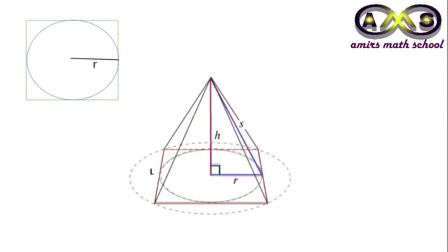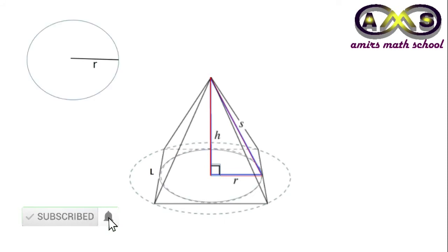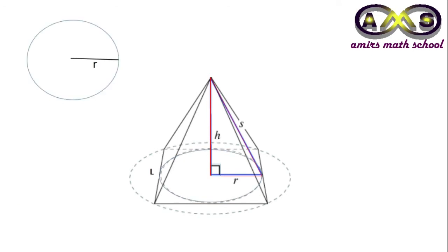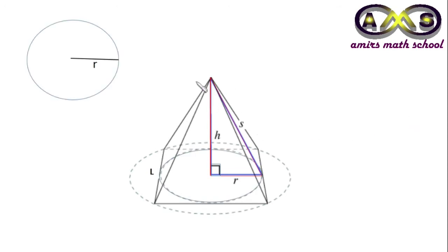To find the slant height of any regular pyramid, we first take the base and draw an inscribed circle on it. The inscribed circle touches all sides of the polygon. Since the base of this pyramid is a square, the inscribed circle touches all four sides. The line joining from this touching point to the vertex is called the slant height. This slant height, the height, and the inscribed radius r form a right angle triangle.